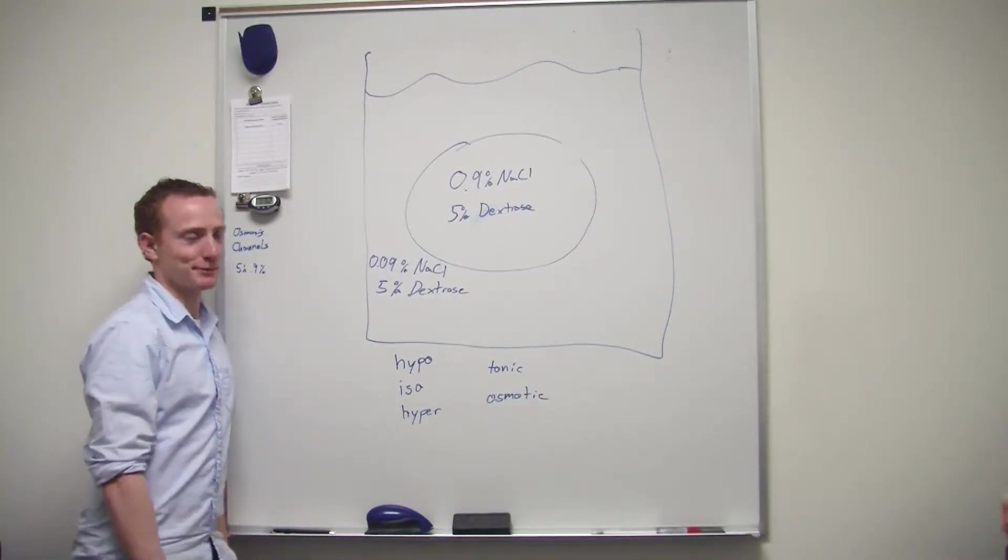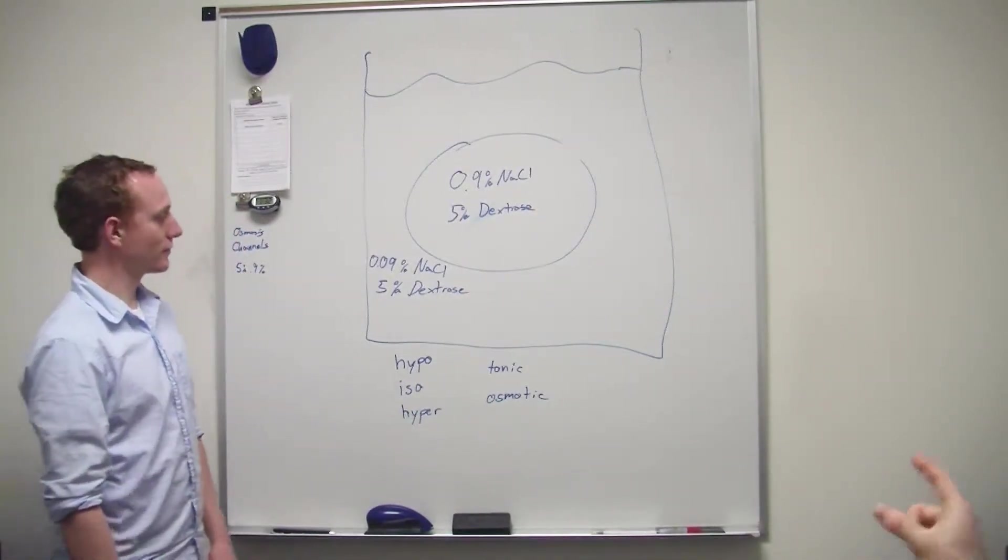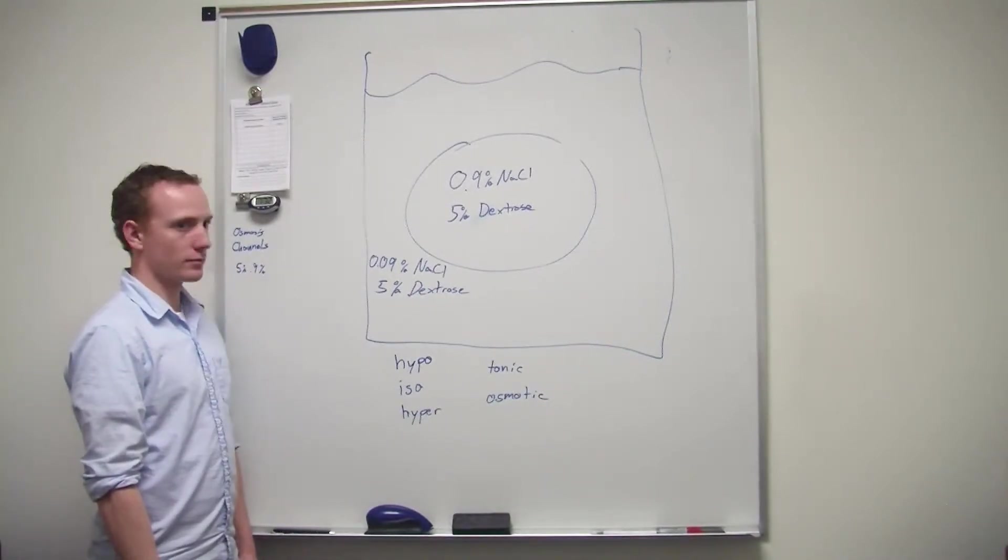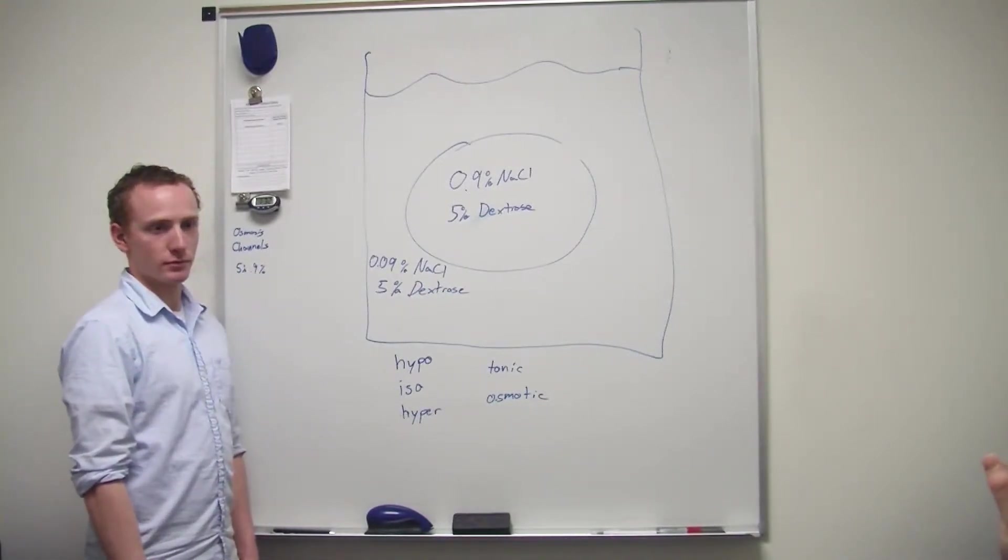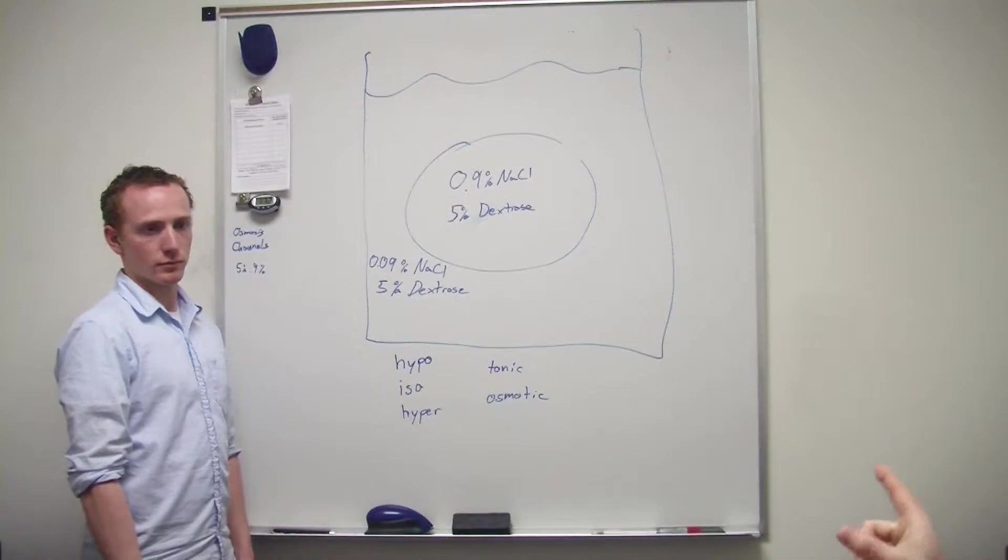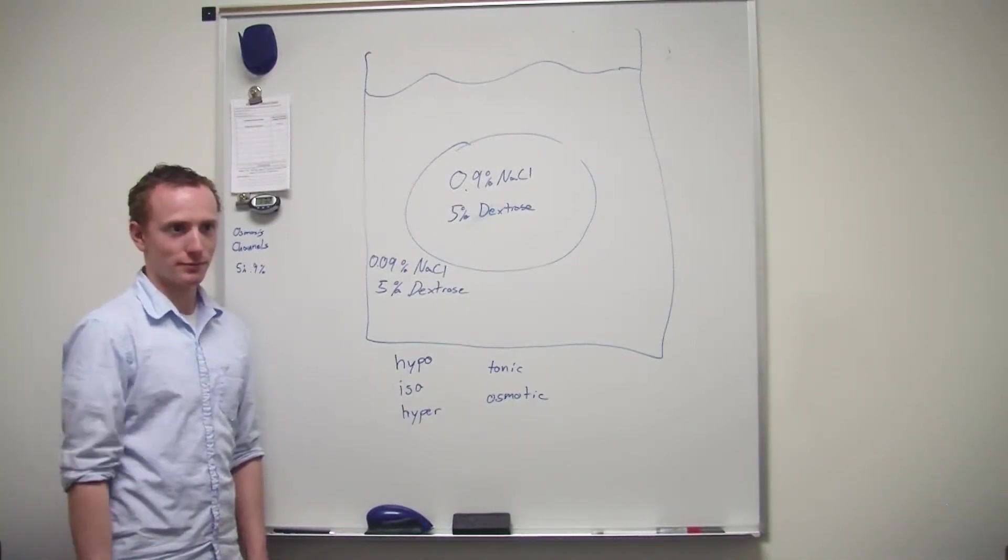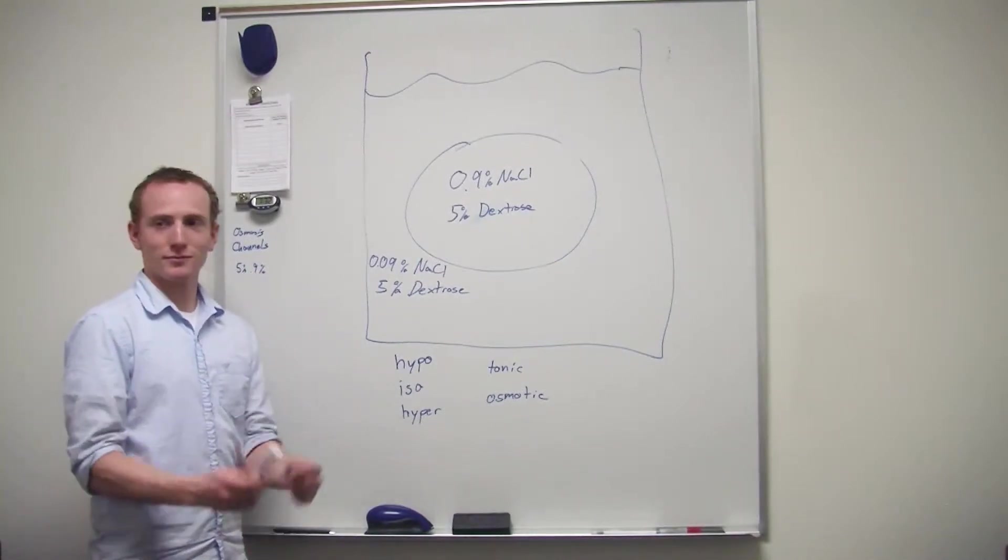Does that make sense why? Okay, so the first one, the isotonic is worried only about the difference in the fluids. The tonic is when the membrane comes in, selectively permeable membrane. Correct. Okay, that makes sense now.